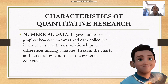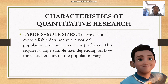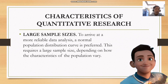The next characteristic is numerical data. Figures, tables, or graphs showcase the summarized data collection in order to show trends, relationships, or differences among variables. The chart and table allow you to see the evidence collected. The next characteristic is large sample size. To arrive at a more reliable data analysis, a normal population distribution curve is preferred, requiring a large sample size depending on how the characteristics of the population vary. Random sampling is recommended to avoid research bias in interpreting the results.